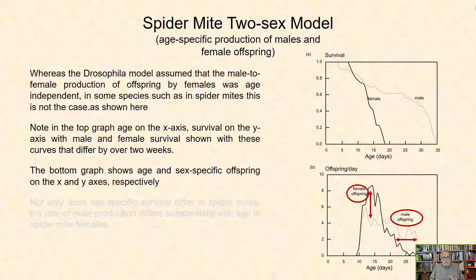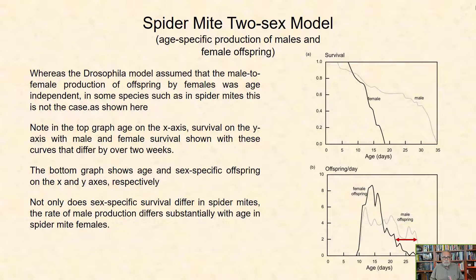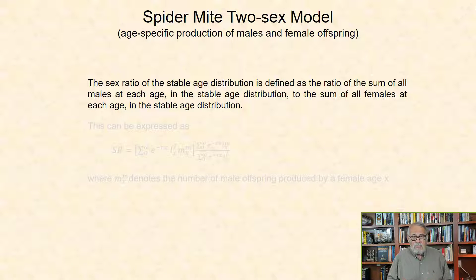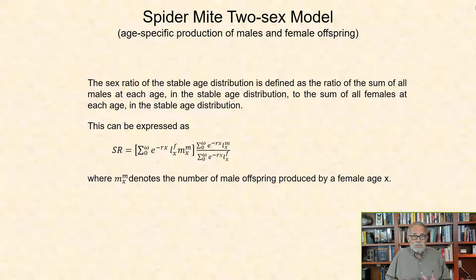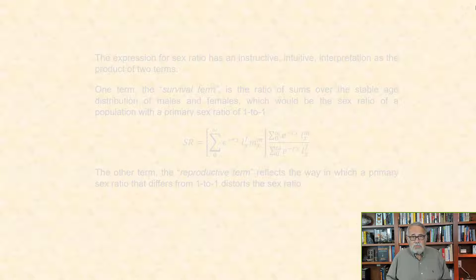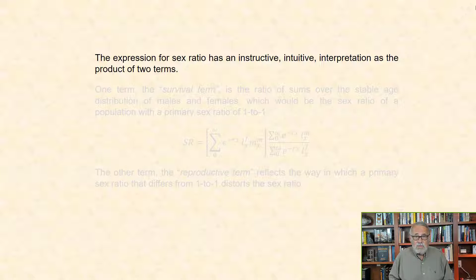Not only does sex-specific survival differ in spider mites, the rate of male production by females differs substantially with age. The sex ratio of the stable age distribution is defined as the ratio of the sum of all males at each age to the sum of all females at each age in the stable age distribution. This can be expressed as a formula where mx, with subscript m, denotes the number of male offspring produced by a female age x. Use of this expression assumes that the number of offspring produced depends only on numbers of females in the population, and not on the number of males.